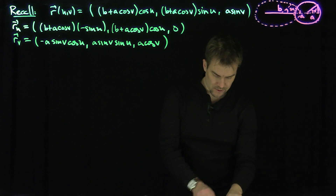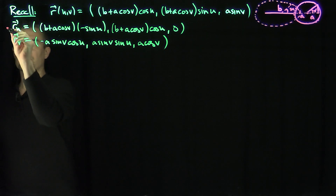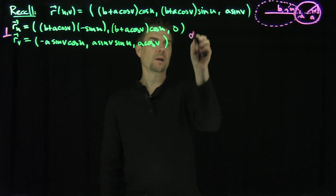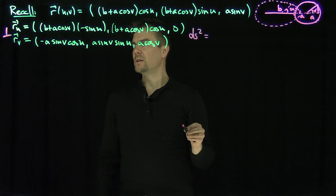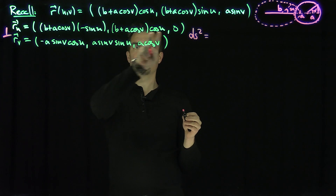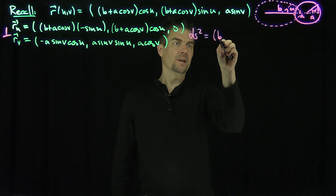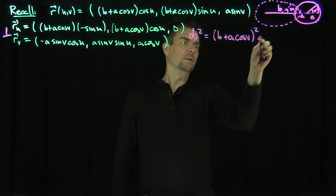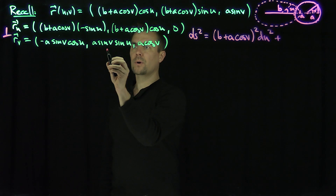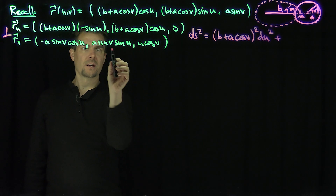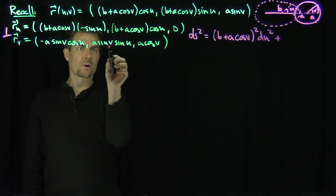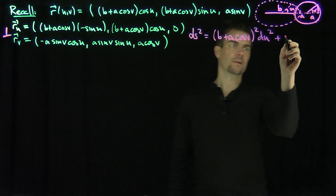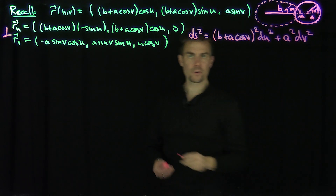It's actually easy to check that these vectors are perpendicular to one another, which means there are no cross terms in the metric tensor. So our ds² is going to be (b + a·cos(v))²·du² — that's this component squared plus this component squared — plus a²·dv², since the sine-squared and cosine-squared terms combine to give just a².